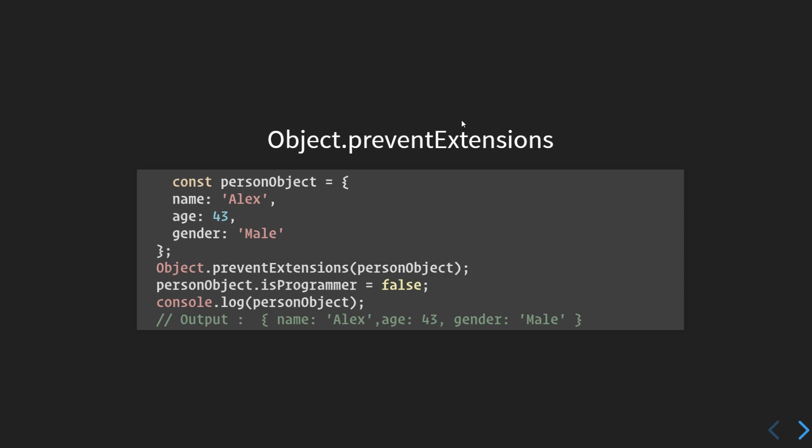So if we try to add a property 'isProgrammer' (a boolean) to the person object, this should fail. If we try logging the person object to the console, you will see the same structure as before — name is 'Alex', age is 43, gender is 'male' — but 'isProgrammer' is not there, because we have prevented extensions on the person object.